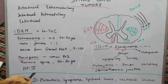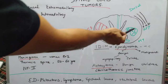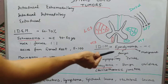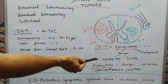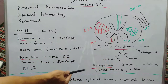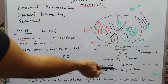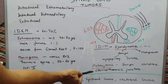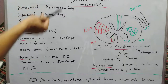Meningioma is associated with neurofibromatosis type 2. For intradural intramedullary tumors, the two most common are ependymoma (which can be benign or malignant depending on histopathology — subtypes include myxopapillary and cellular) and astrocytoma, which is mostly benign, seen in children, involving the cervicothoracic junction.